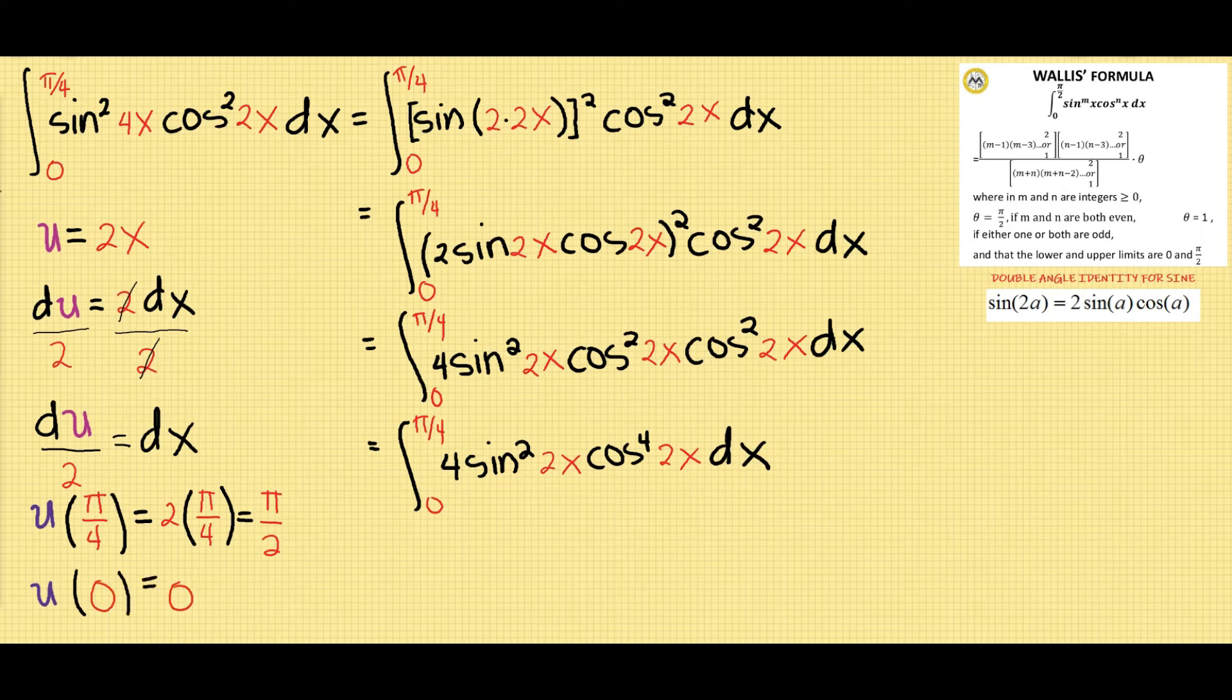We change the bounds into their corresponding new bounds by evaluating the values of u at pi over 4 and 0. Now, we find pi half and 0 respectively.